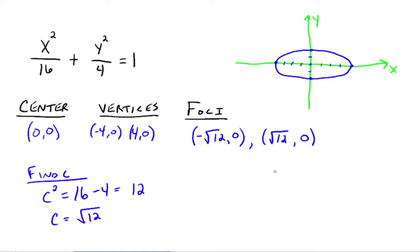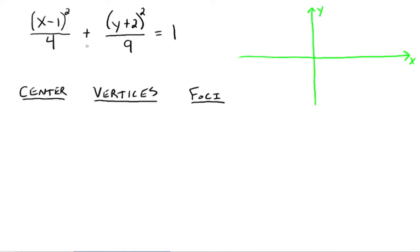Let's try one where the center is not at the origin. We have x minus 1 squared over 4, plus y plus 2 squared over 9, equals 1. Note it's always equal to 1 and always a plus — if it's a minus, it's a different conic section. The center would be 1, negative 2. From that point, we want to go up, down, left, and right whatever we need to go.